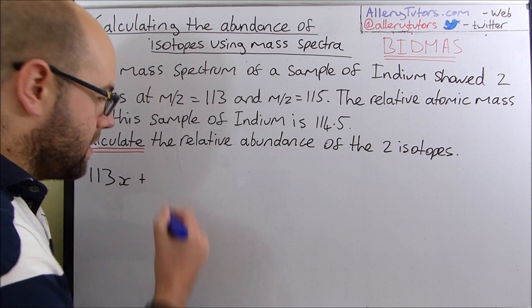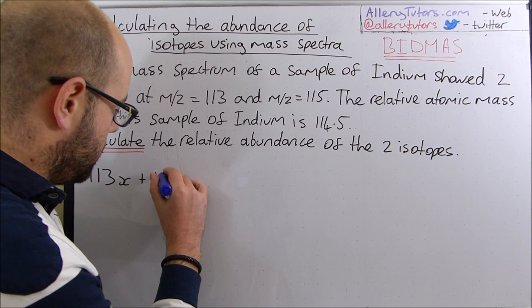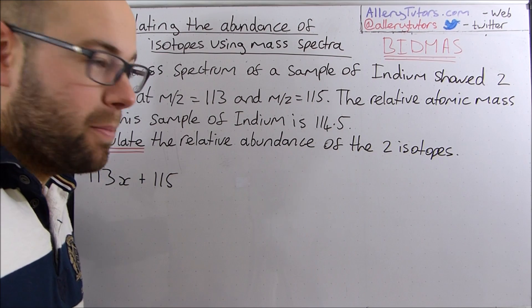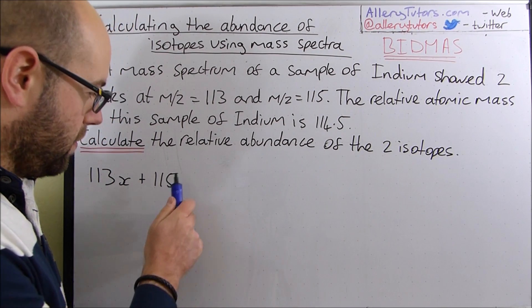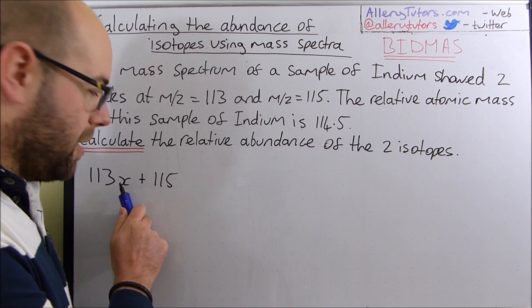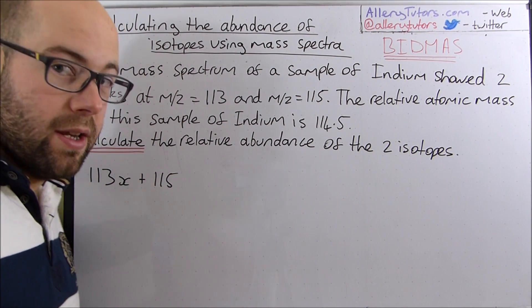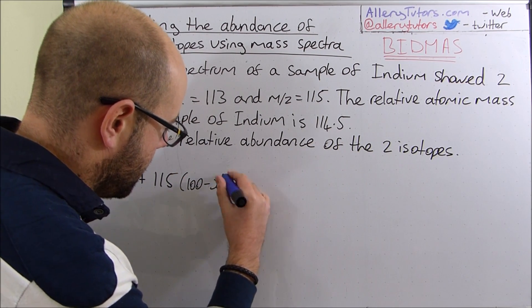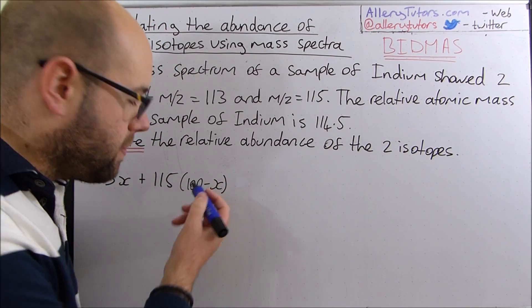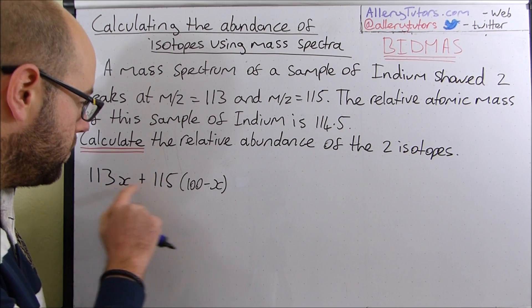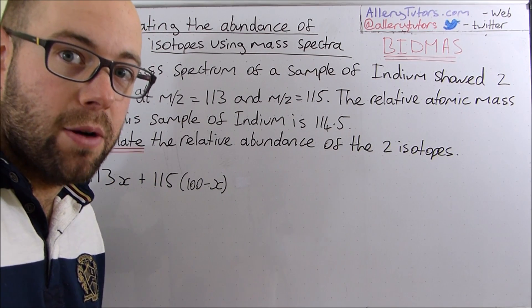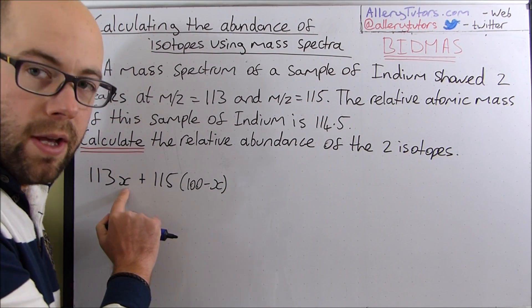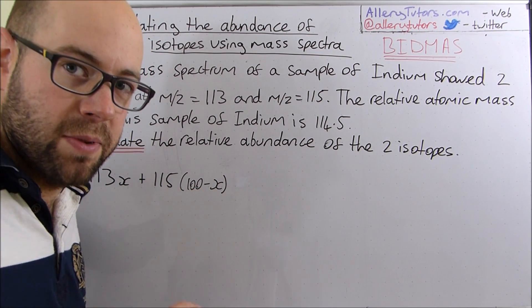Then we're going to add that to the next isotope which is 115. But again we don't know what the abundance is. But we do know that the abundance of this element will be 100 minus whatever the abundance is of this one. So we're going to put 100 minus X. The 100 represents 100%, so both of these isotopes make up 100% of all the isotopes in this element of indium. So this value will be 100 minus whatever that value is because that's just what's left.